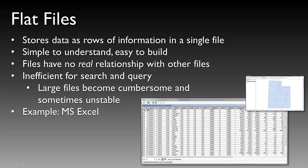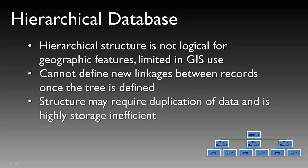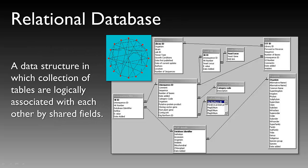An example of a flat file is a Microsoft Excel sheet. The hierarchical database is a database that stores data in multiple tables in a tree-like form. The tables have a defined parent-child relationship, and each parent may have many children, but children may only have one parent. Hierarchical databases are very efficient for specific types of queries. However, the hierarchical database structure is not logical for geographic features. Hierarchical databases cannot define new linkages between records once the tree is defined. Structures may require duplication of data and are highly storage-inefficient.